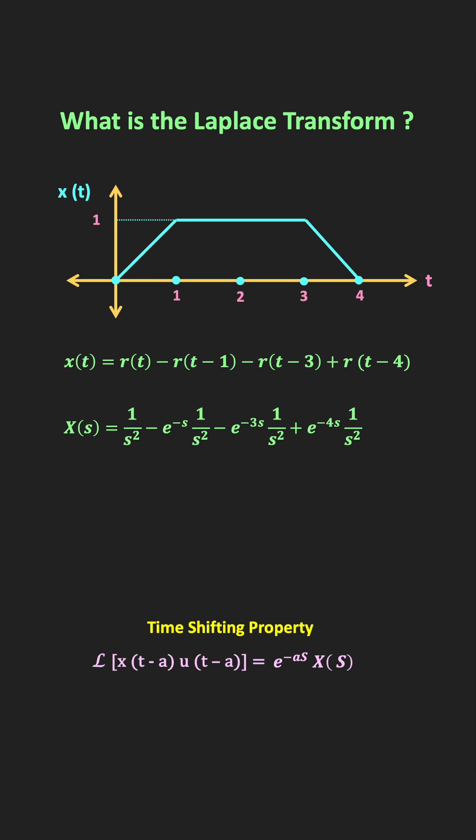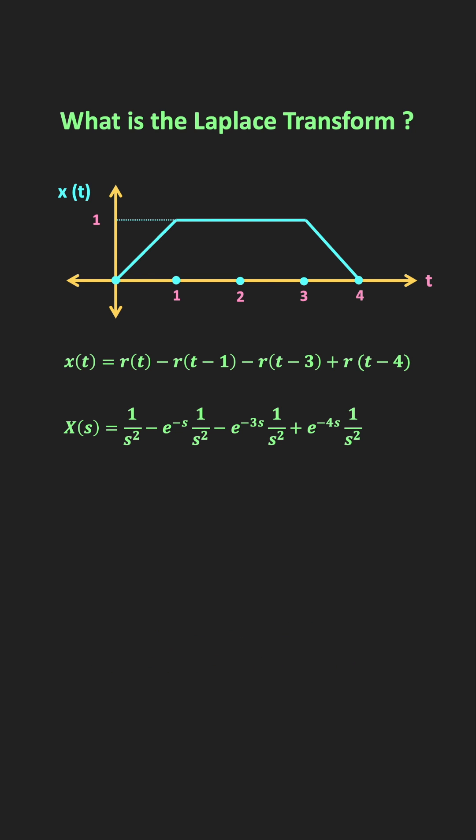Using the same property, we can also find the Laplace transform of the subsequent ramp functions. So now if we take 1 divided by s squared outside, then this is the Laplace transform of this trapezoidal function.